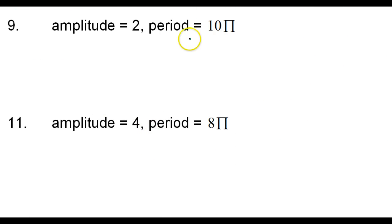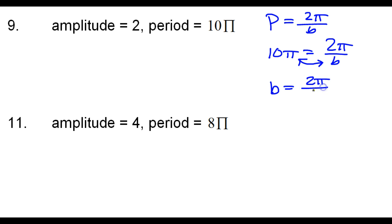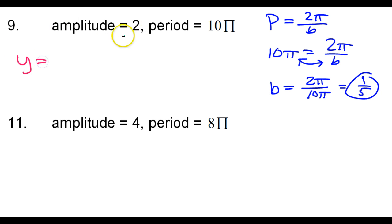Number 9. The period is 2 pi over b. That means 10 pi is equal to 2 pi over b. Reversing these gives b equals 2 pi over 10 pi. The pi's cancel, and 2 over 10 is 1 fifth. So y equals 2 sine of 1 fifth x.